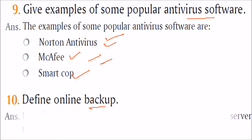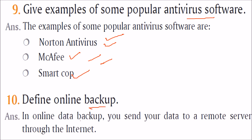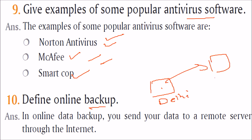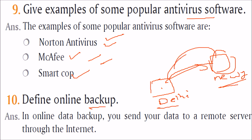Define online backup. In online backup, your system is here — say in Delhi — and you are sending data to say New York, remotely backing it up. Whenever there is a problem in Delhi or New York, you can easily get or restore the data back.